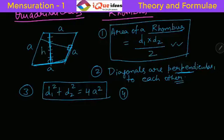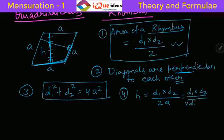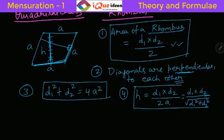There is a direct formula for this height H which is equal to D1 into D2, that is product of diagonals, divided by 2 times the side, which can also be presented as D1 into D2 divided by square root of D1 square plus D2 square. So this is a direct formula for height of a Rhombus. All this can be calculated from the formula of area. Nothing to worry, you can directly memorize these rules as much as possible.